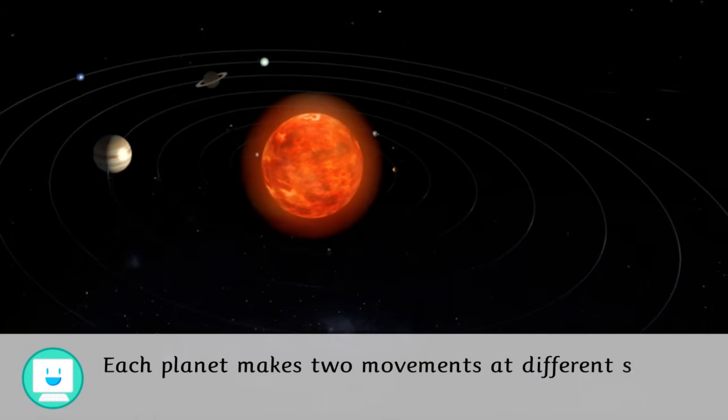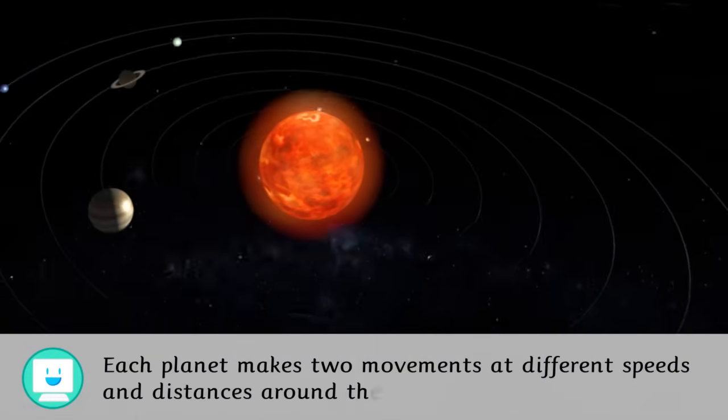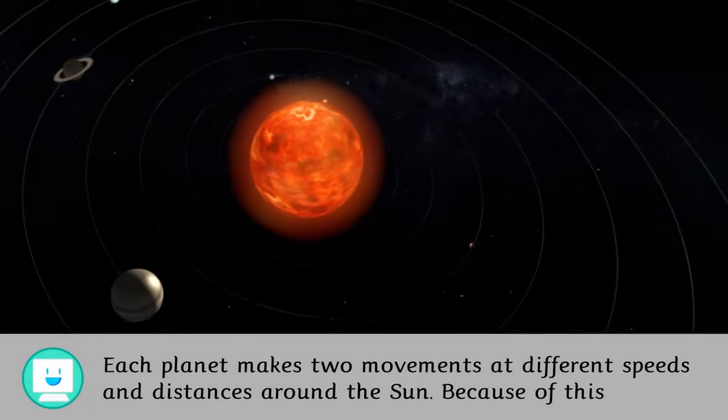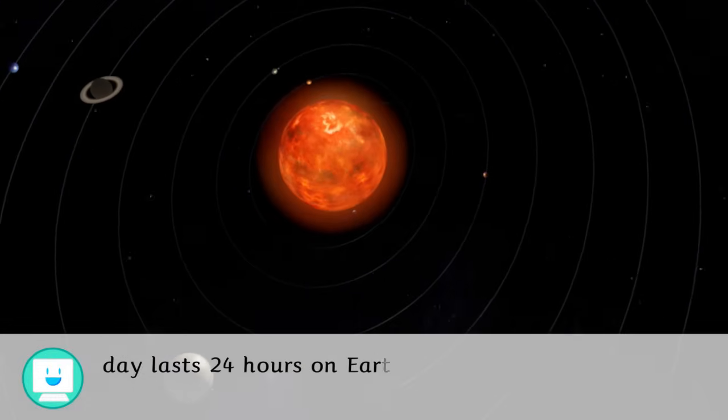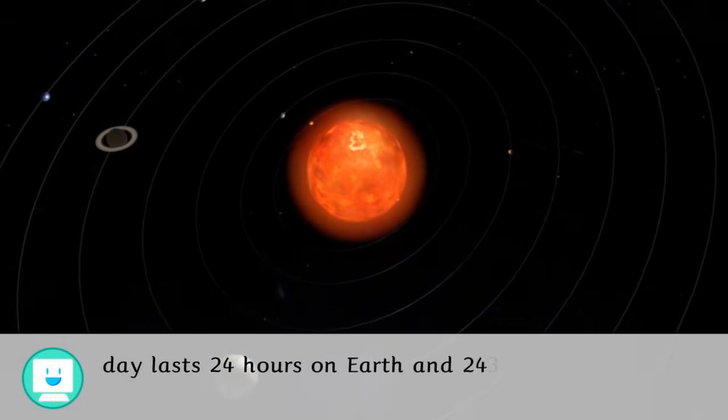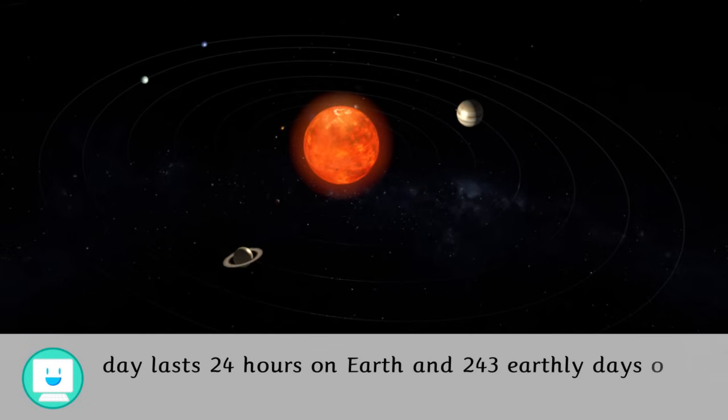Each planet makes two movements at different speeds and distances around the Sun. Because of this, a day lasts 24 hours on Earth and 243 earthly days on Venus.